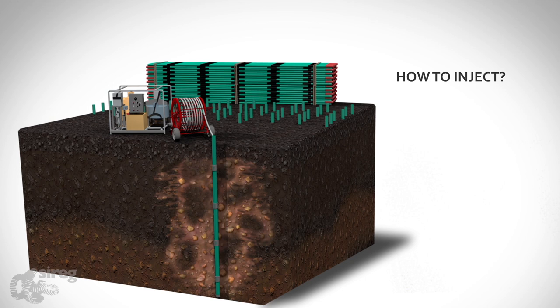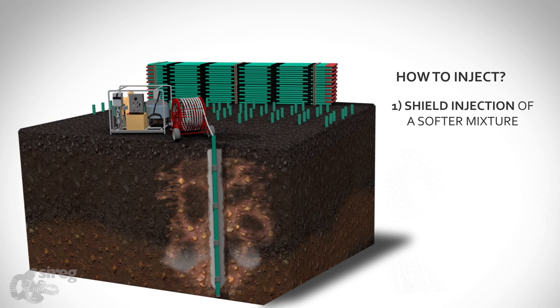How to inject. First, a softer mixture or shield is injected to prevent the cement from rising along the borehole during the following injections.